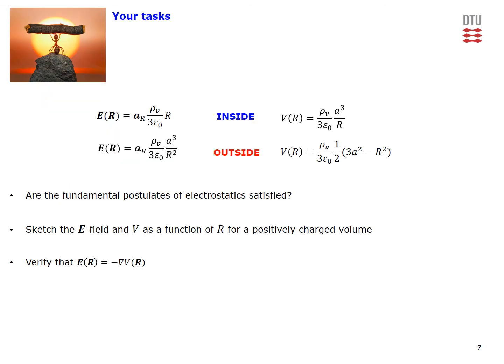We have now completed our tasks in this video problem. Here you can see a summary of the results. We also have a few tasks for you: verify whether the fundamental postulates of electrostatic fields are satisfied by the derived electric fields; sketch the electric field and the potential as a function of radial coordinate r for a positively charged volume; and verify that the derived electric field is exactly the negative gradient of the derived potential.